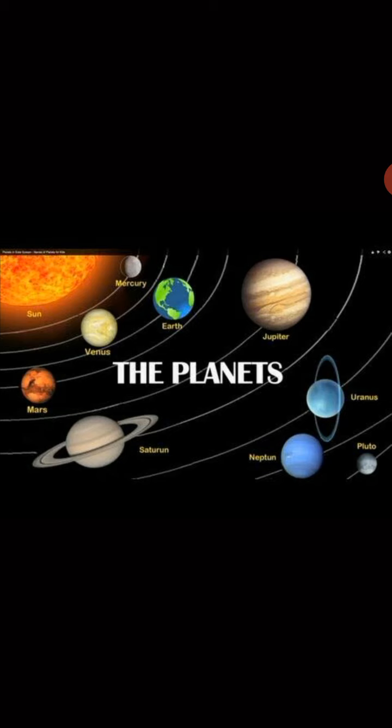Scientists used to wonder why the planets which revolve around the Sun are not in random motion. Why are they fixed around a certain particular orbit?